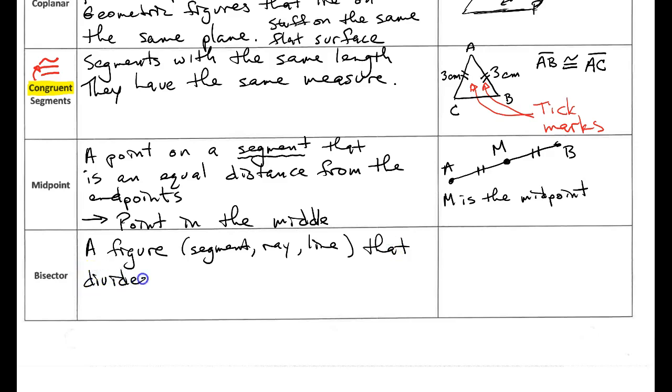Okay notice I'm going to use symbols whenever I can so I don't have to write out the whole word so that'll save me some time. So remember this is congruent. So a figure that divides another figure into two congruent parts.